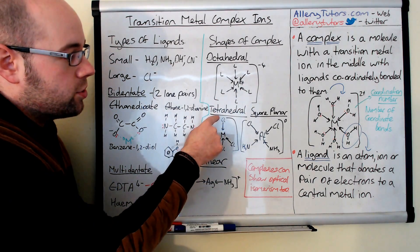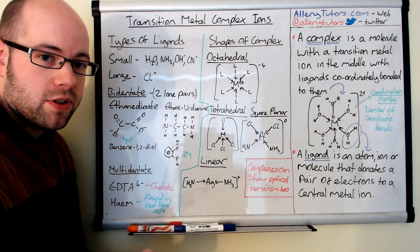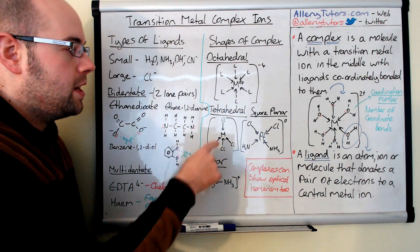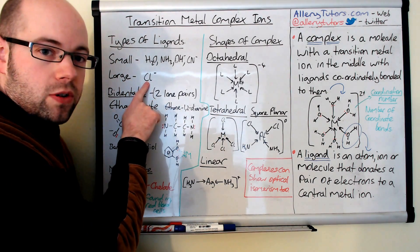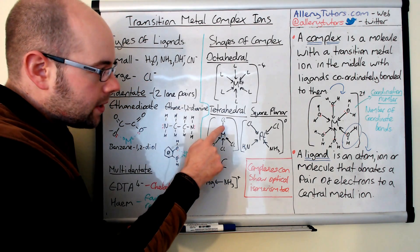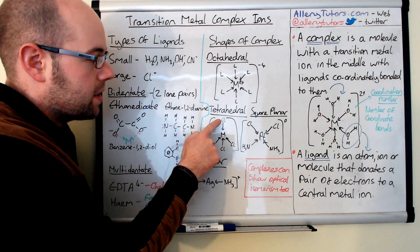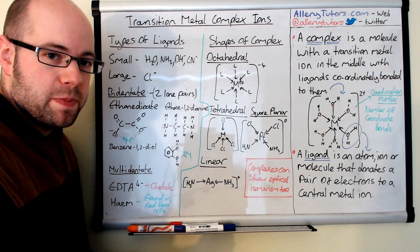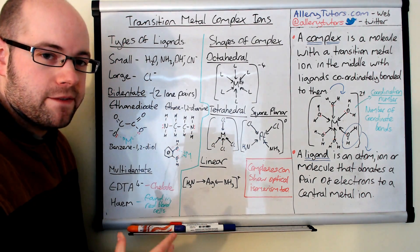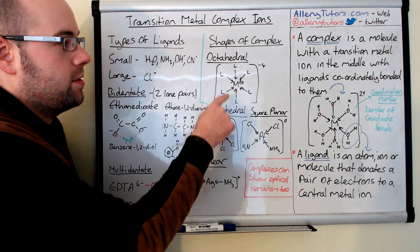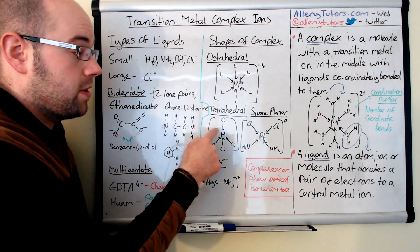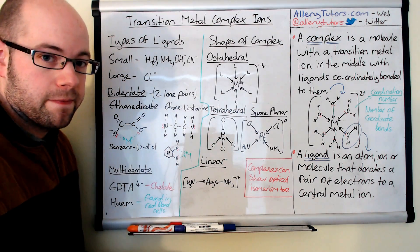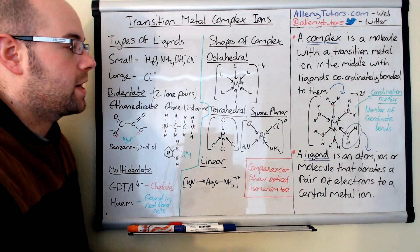Tetrahedral complexes are normally formed by larger ligands such as chloride. You can see four chlorine ligands — it's a much bigger ligand and you can't fit six around the metal ion, so you settle for four.